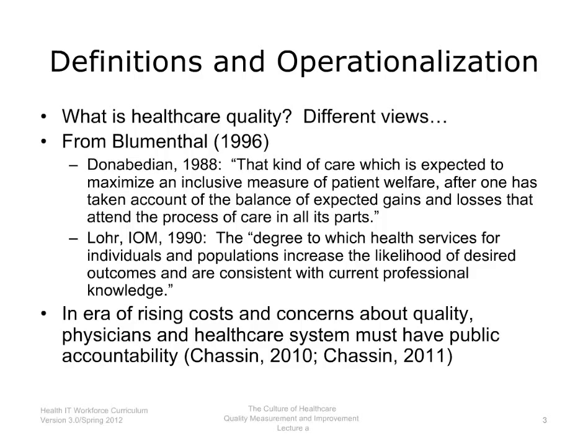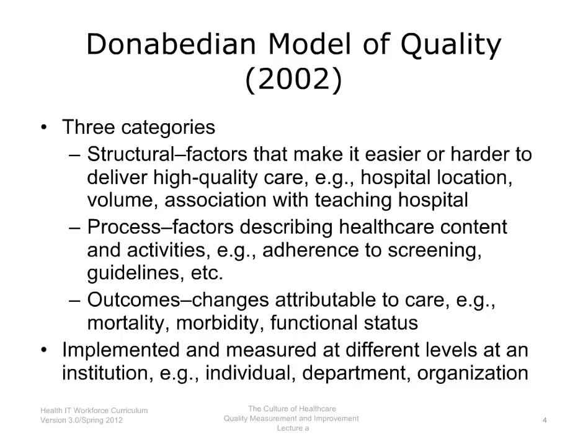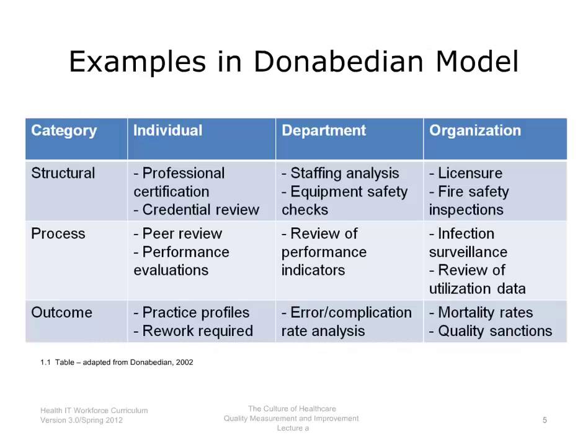Donabedian developed a model of quality with three categories of quality measures. The first are structural measures — factors that make it easier or harder to deliver high-quality care, such as hospital location, patient volume, and whether the hospital is associated with a teaching institution. The second category is process measures — factors describing healthcare content and activities, such as how much screening is done and how much established practice guidelines are adhered to. Finally, there are outcome measures, or changes attributable to care, such as mortality rate, morbidity, and functional status. These are implemented and measured at different levels: the individual practitioner, the departments, and the organization as a whole.